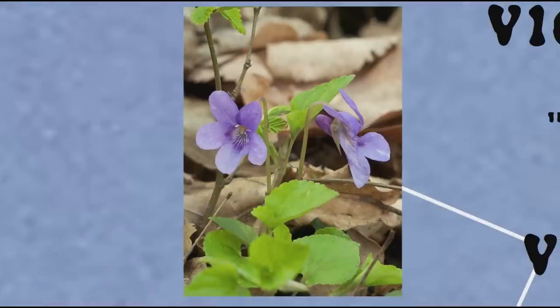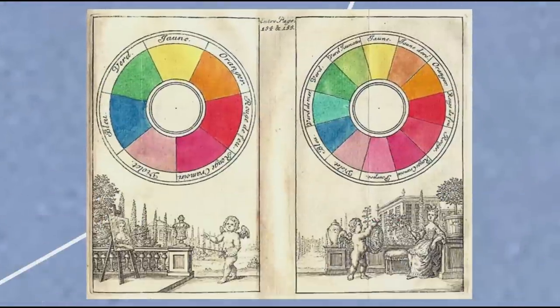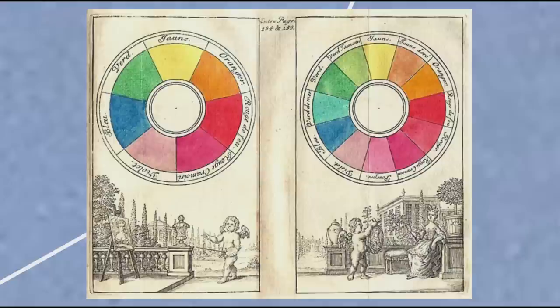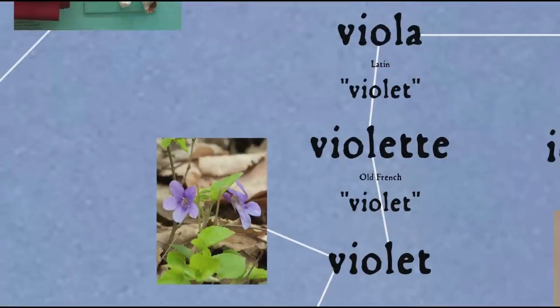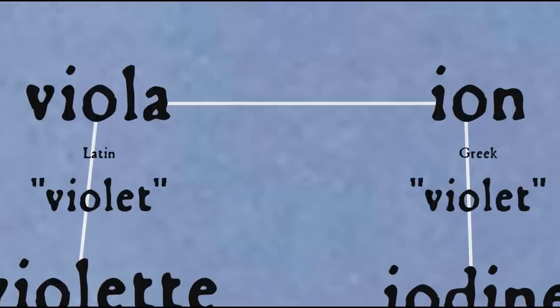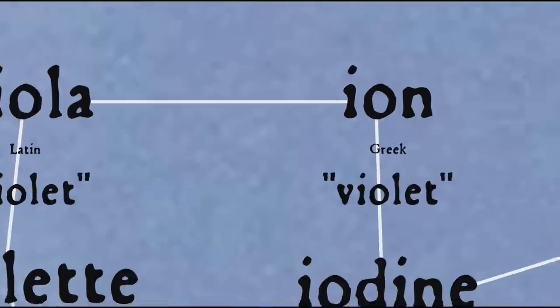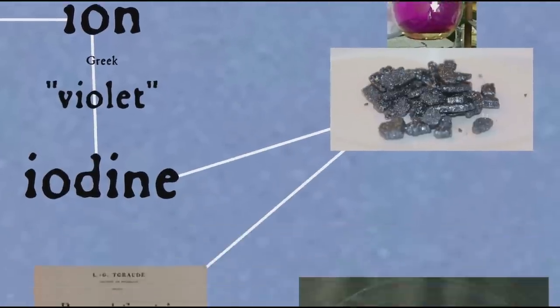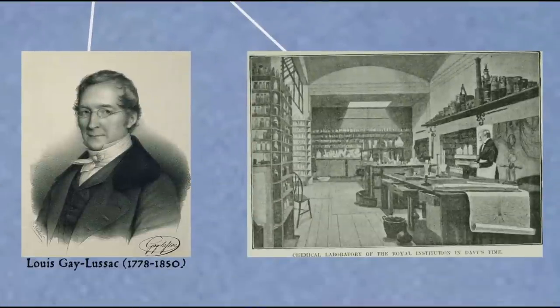Another common word for the colour purple is 'violet', which comes from the name of the flower. Technically, violet is actually the colour on the spectrum of visible light having a specific wavelength, whereas purple is the blending of red and blue wavelengths. The word 'violet' comes into English through Old French 'violette', from Latin 'viola'. Though we don't know where this Latin word comes from, it seems etymologically related to the Greek word 'ion', which refers to the same flower. This Greek word makes its way into English in the word 'iodine', coined by Sir Humphry Davy from Louis Gay-Lussac's French word for the element, 'iode'.